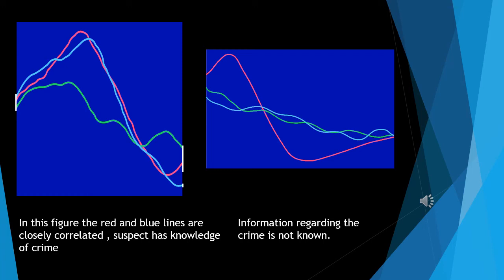In the second figure, green and blue are correlated. It means the information regarding the crime is not known.